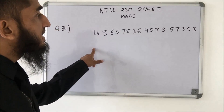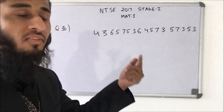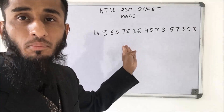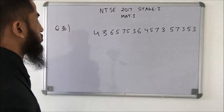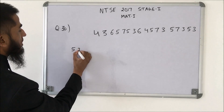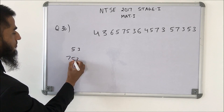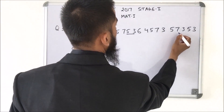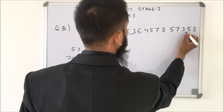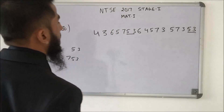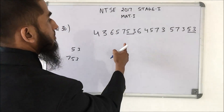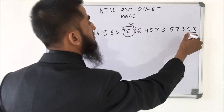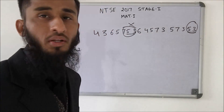This question asks: in the given sequence, how many fives are immediately followed by 3 but not immediately preceded by 7? We need the pattern 5-3, but exclude 7-5-3. We find 5-3 appears three times in the sequence, but one of them is 7-5-3 which we reject. So the correct answer is 1.